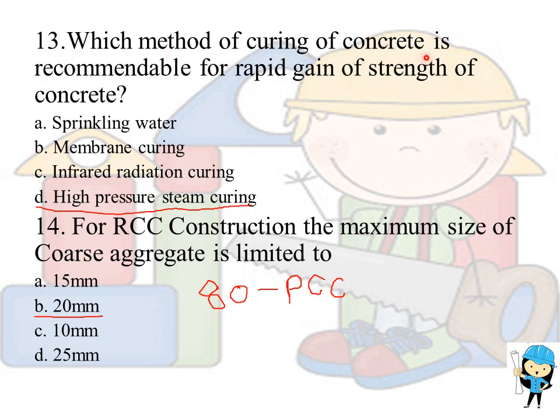Which method of curing of concrete is recommendable for rapid gain of strength? The answer is high pressure steam curing. Sprinkling water is used for normal construction.